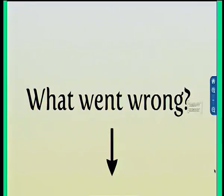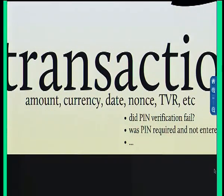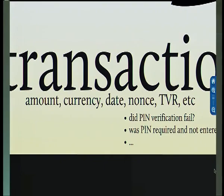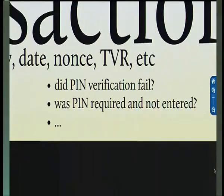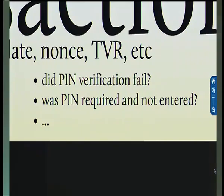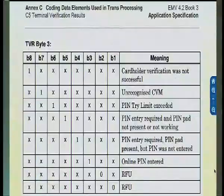But clearly that isn't working — so what went wrong? If we look at the system in more detail and examine what is actually sent to the card: there's the amount, the currency, the date, a nonce — a random number — and then there's a TVR. The TVR is the Terminal Verification Results, which contains the terminal's view of how the transaction went, whether anything went wrong, and if so, what. Byte 3 within this deals with the PIN. And although this is really the core of the protocol, it's only described in Annex C5 in a small table at the back of the spec.